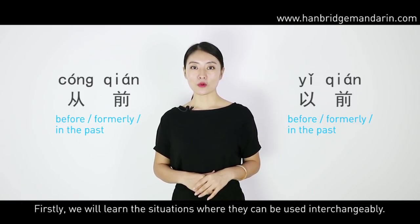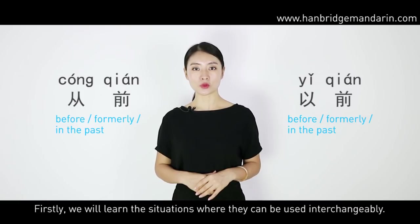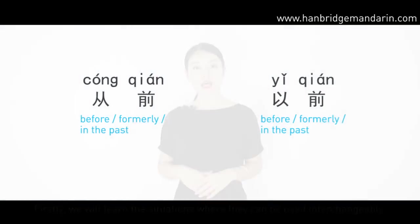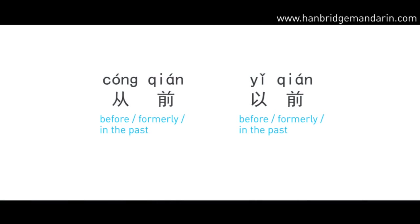Firstly, we will learn the situations where they can be used interchangeably. 从前 and 以前 can both be used alone to mean 'before', 'formerly', or 'in the past' in an approximate way. Let's look at some examples.